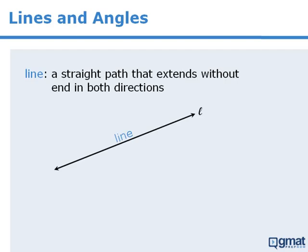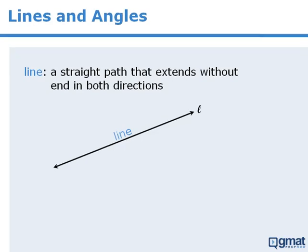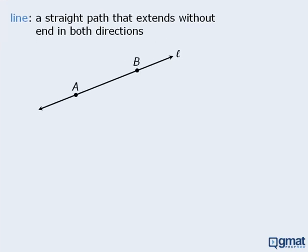To begin, a line can be thought of as a straight path that extends without end in both directions. A finite portion of a line is called a line segment, so here AB is a line segment.